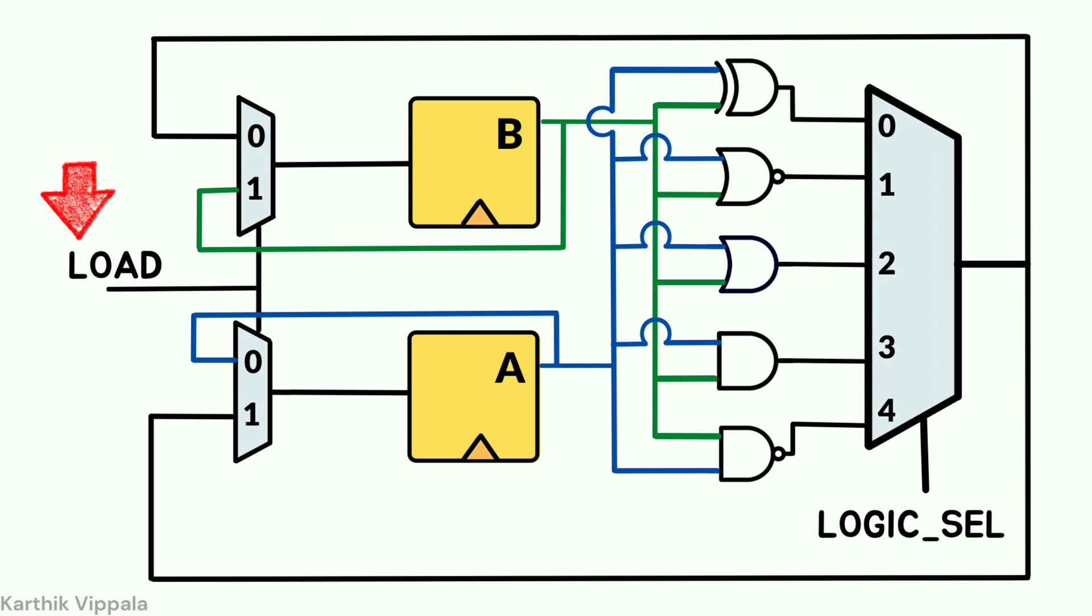By choosing the load value, you can load the data of the output of the multiplexer back to A or B. If you choose load A, the output will be loaded back into A, or you can load into B.